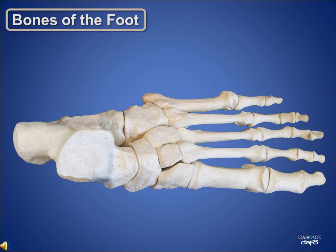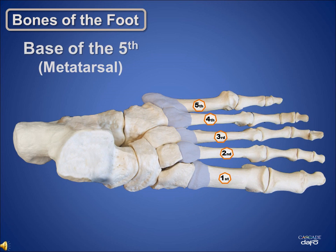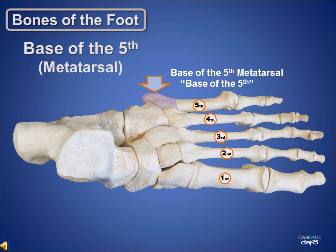Let's back up and review some other key features of this area. The proximal end of a metatarsal bone is called the base, the middle section is called the neck, and the distal end is called the head. What we focus on is the base of the fifth metatarsal, or the base of the fifth. The base of the fifth is an important prominence on the lateral side of the foot.